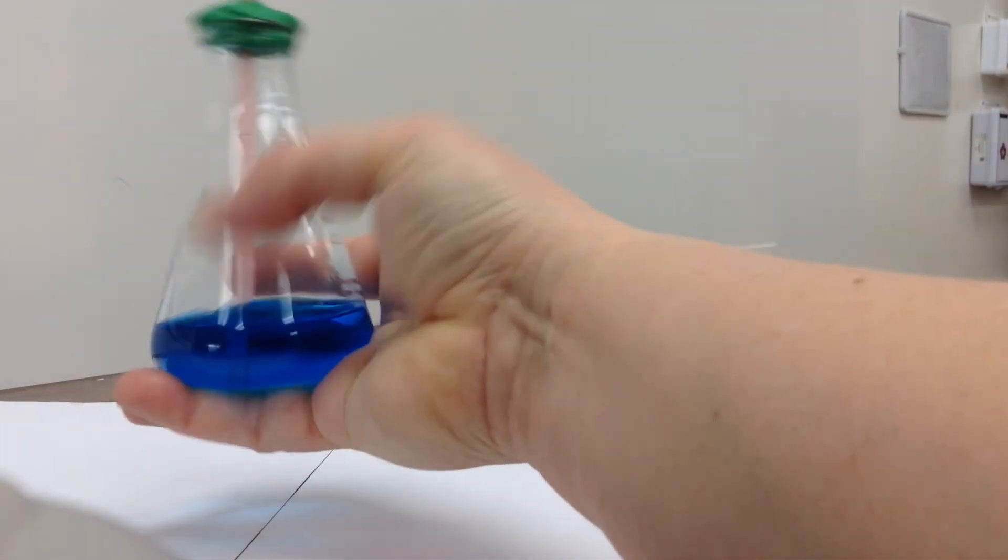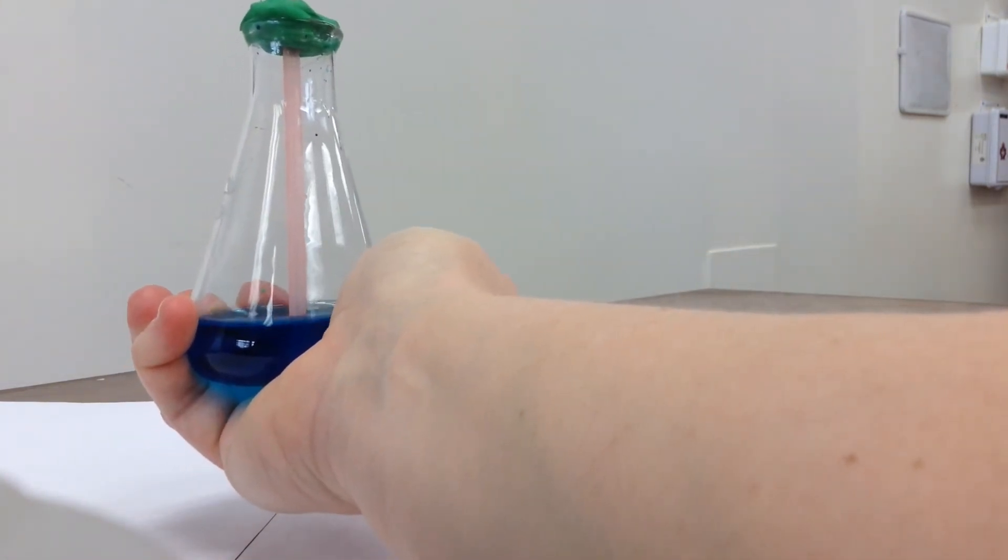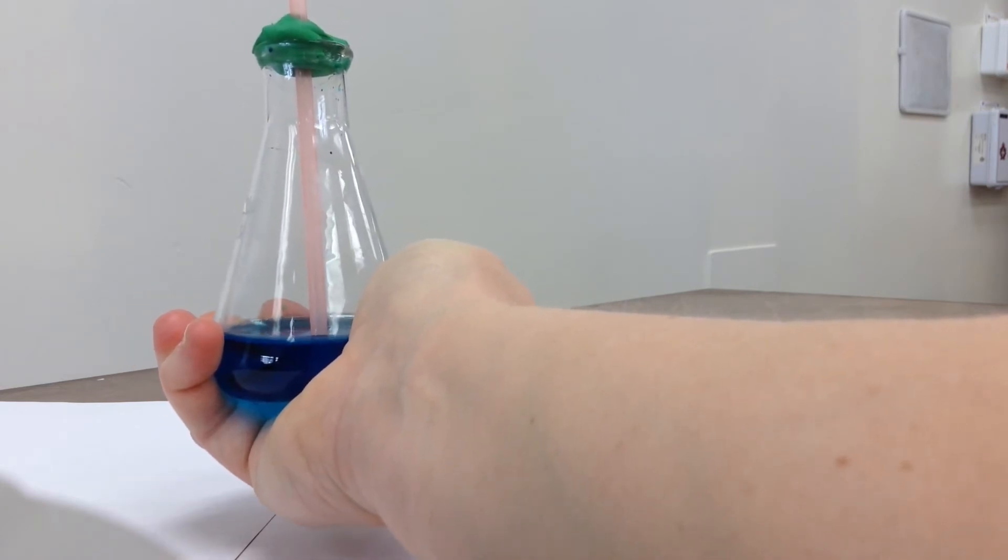So if you put it in something warm, like the heat from your hand, it might be able to make the level of our liquid go up the straw.